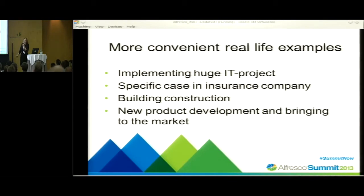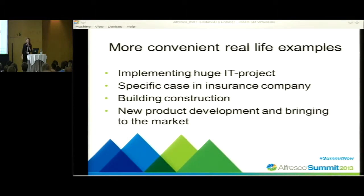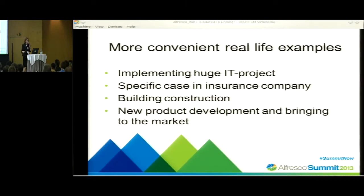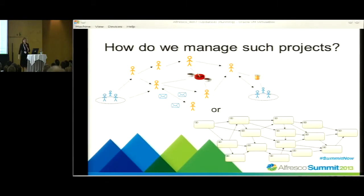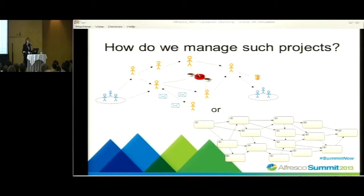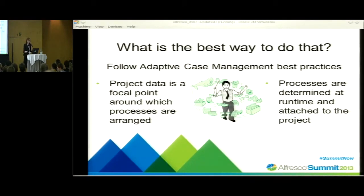Let's take a more real-life example — opening a representative office in another country. It includes many unpredictable tasks and a lot of unstructured data. How do we usually manage such projects? Usually we try to draw the full business process diagram ahead of time, or the project manager tries to keep in mind all interactions and tasks and doesn't use any project management tool.